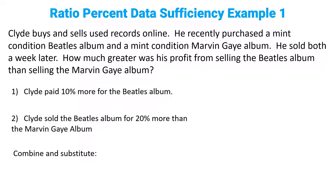For those of you who have already done example number two, example number one is going to seem very familiar, but with everything on the GMAT, the devil is in the details, so read very carefully. Clyde buys and sells used records online. He recently purchased a mint-conditioned Beatles album and a mint-conditioned Marvin Gaye album. He sold both a week later. How much greater was his profit from selling the Beatles album than from selling the Marvin Gaye album?